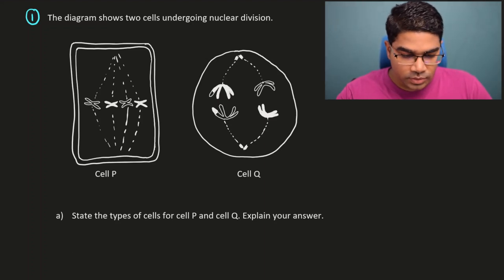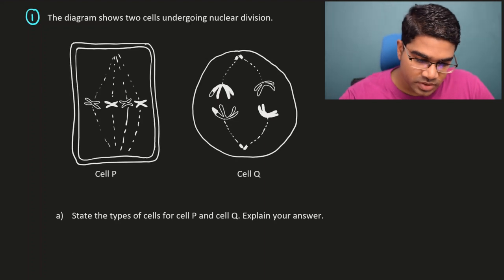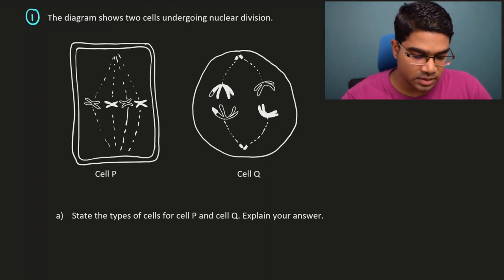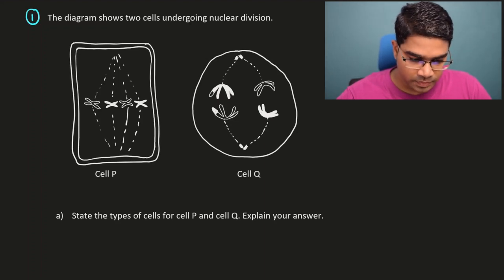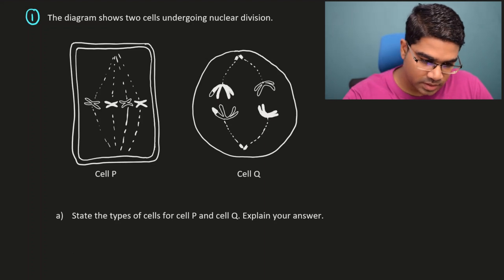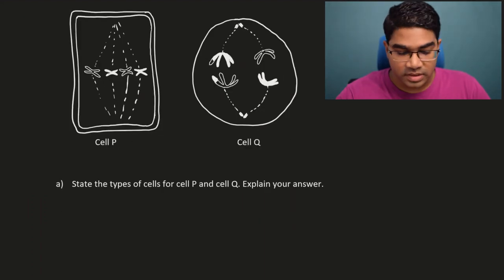The diagram shows two cells undergoing nuclear division. Nuclear division here refers to either mitosis or meiosis. Let's look at cell P and cell Q. The first question is to state the type of cells for cell P and cell Q - they're clearly very different cells.